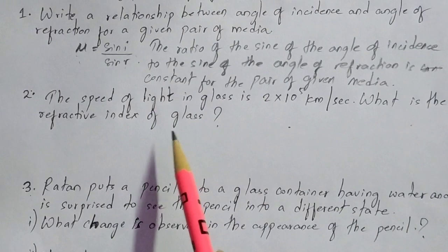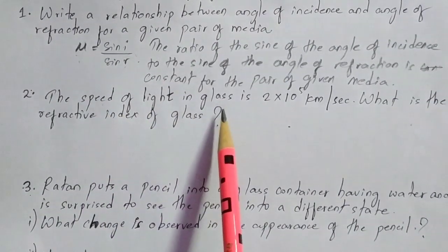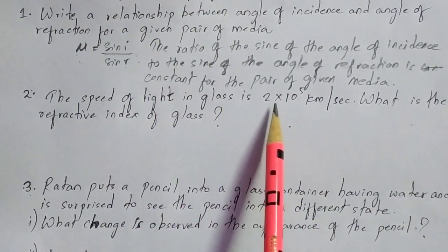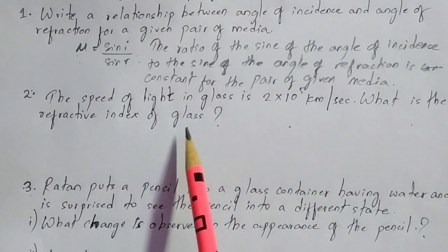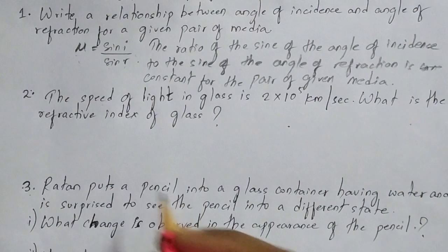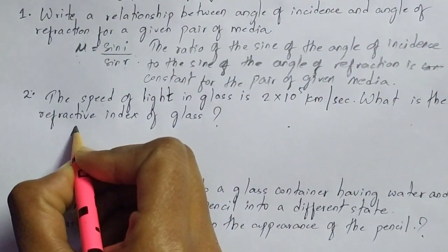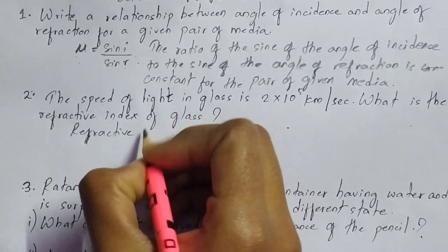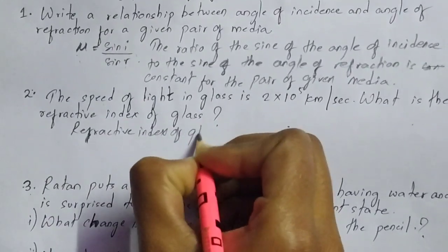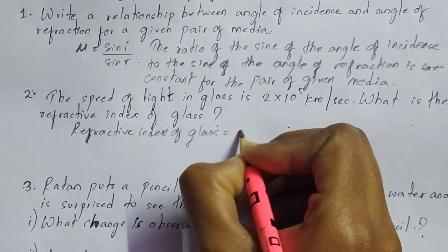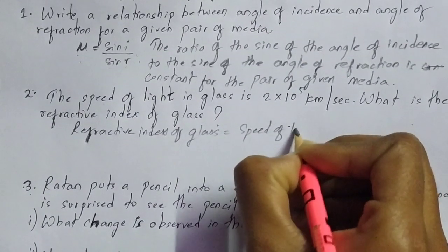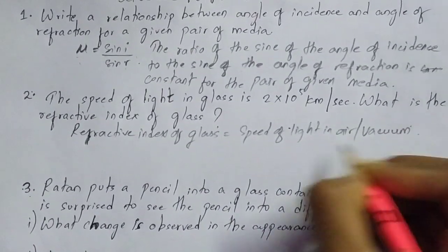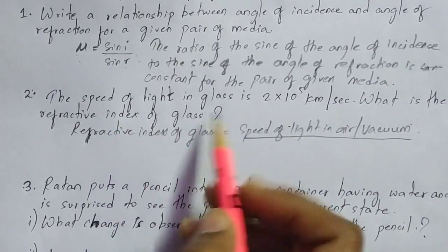The second question is: the speed of light in glass is 2 × 10⁵ km/s. What is the refractive index of glass? The speed of light in glass is given and you have to find the refractive index of glass. The formula is: refractive index of glass equals speed of light in air or vacuum divided by speed of light in that medium.